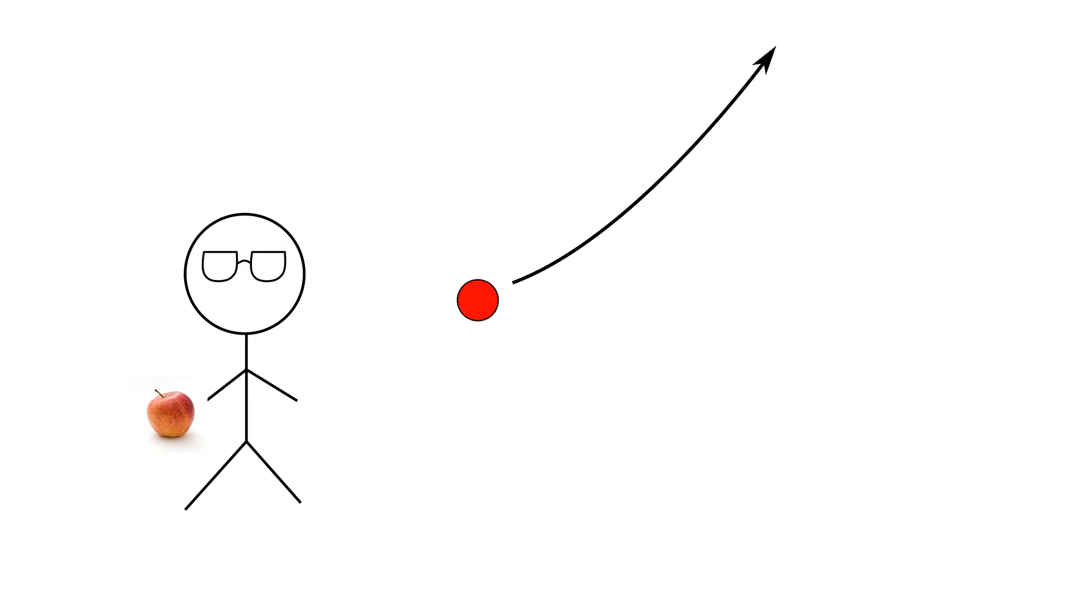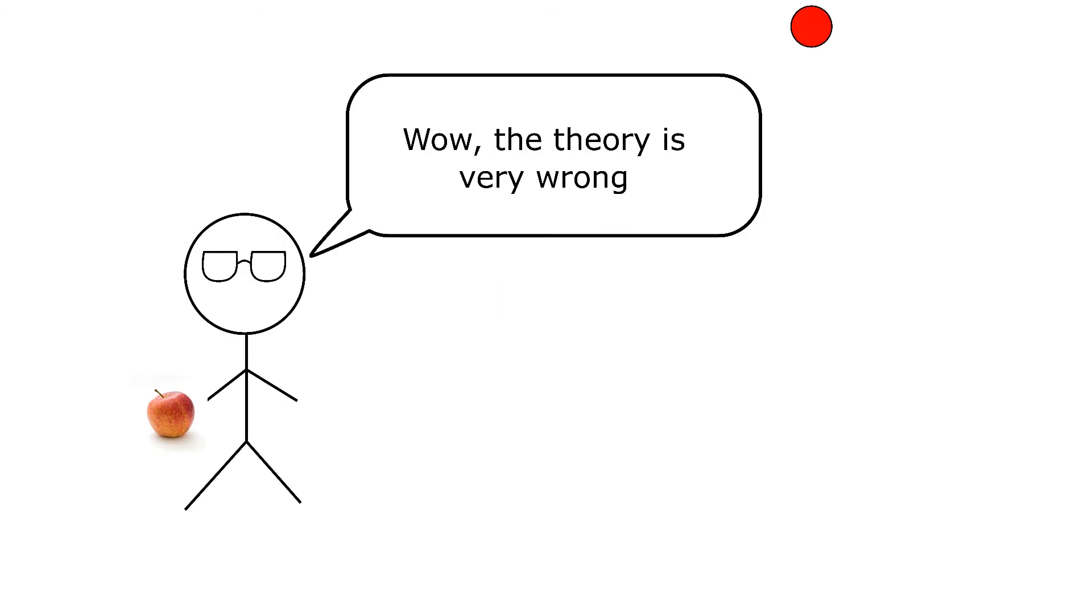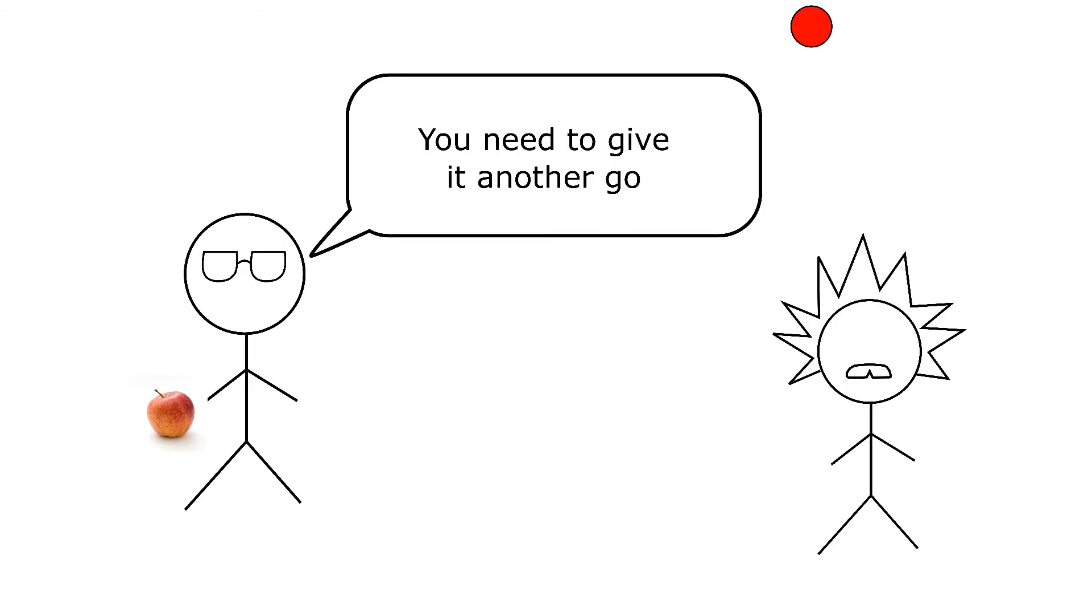If the experiment does not agree with the theory, then that tells us that the theory must be reworked, since it does not accurately predict what will happen. And so goes the cycle of science.